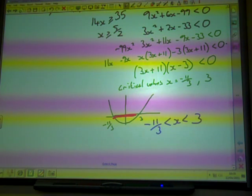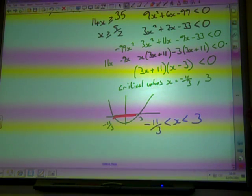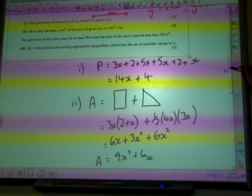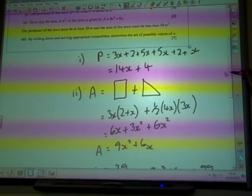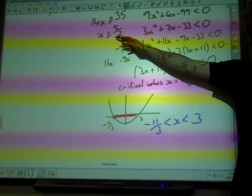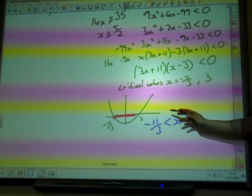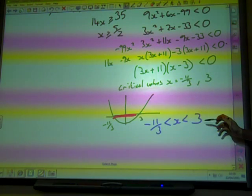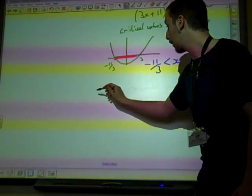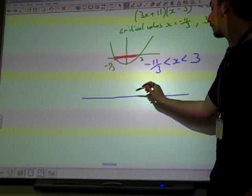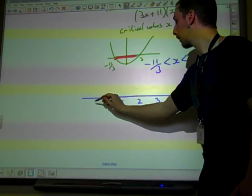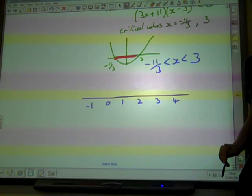This question actually was telling us to solve these two inequalities together. Determine the set of possible values of X. Here we've got that X had to be bigger than 2 and a half. Here we've got X had to be between minus 11 thirds and plus 3. So we need to draw some conclusion from that.